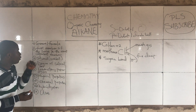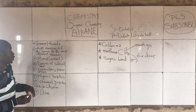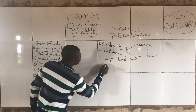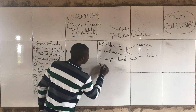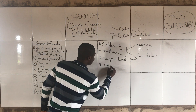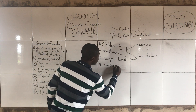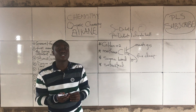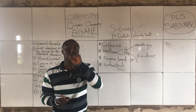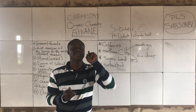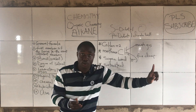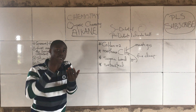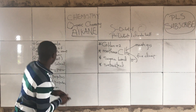Talking about the degree of saturation, alkanes are all saturated. They are all saturated because they contain only single bonds. Alkanes contain only single bonds.